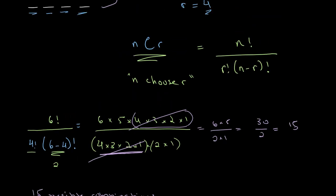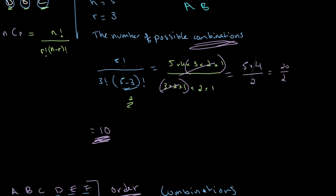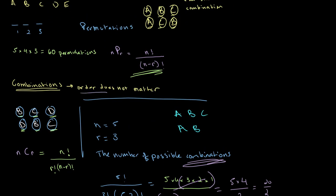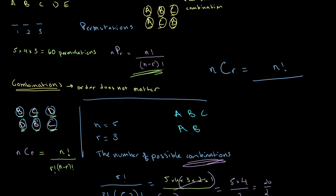So that's simple enough. As a quick recap: in combinations, the order in which we select whatever objects we're looking at does not matter. It's denoted using the equation NCR, or N choose R, which equals N factorial divided by R factorial times N minus R factorial.